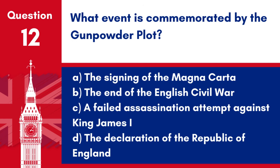Question 12. What event is commemorated by the Gunpowder Plot? a. The signing of the Magna Carta. b. The end of the English Civil War. c. A failed assassination attempt against King James I. d. The Declaration of the Republic of England. Answer: c. A failed assassination attempt against King James I. The Gunpowder Plot commemorates a failed attempt in 1605 to assassinate King James I and blow up the Houses of Parliament.